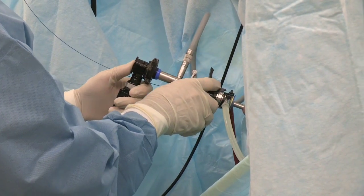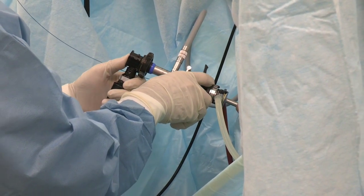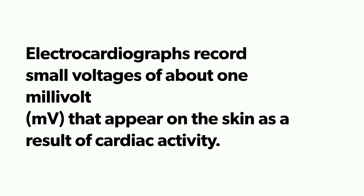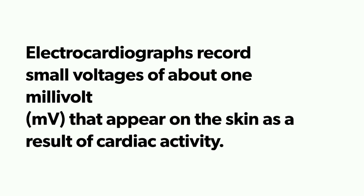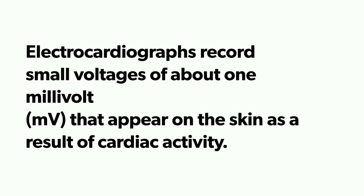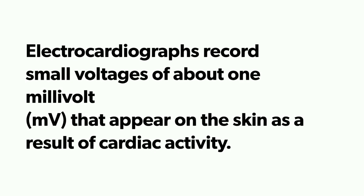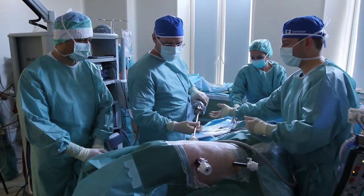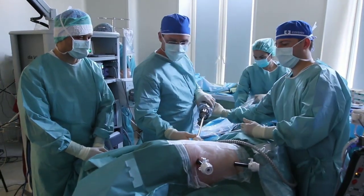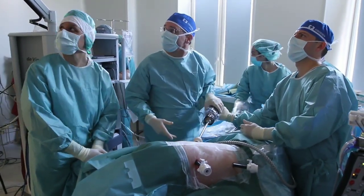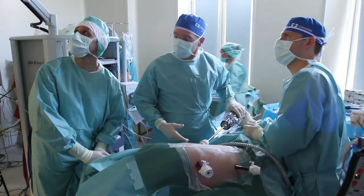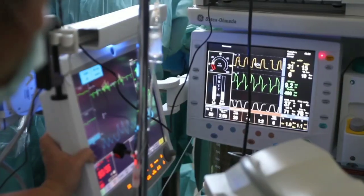Electrocardiographs record small voltages of about one millivolt that appear on the skin as a result of cardiac activity. These voltage differences between the electrodes are measured, and they directly correspond to the heart's electrical activity.